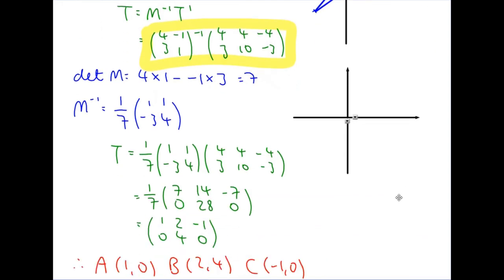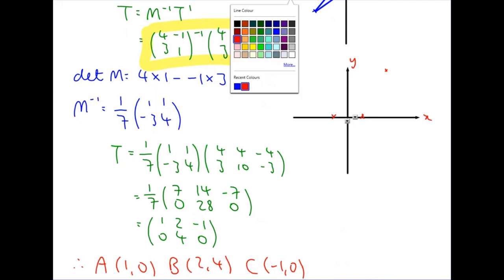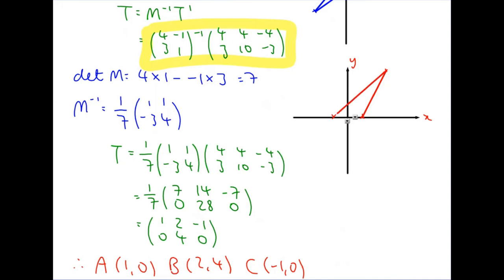And so let's plot this one. T has coordinates at 1, 0, minus 1, 0, and 2, 4. It's not a very good scale, but it'll do. This is the original triangle.